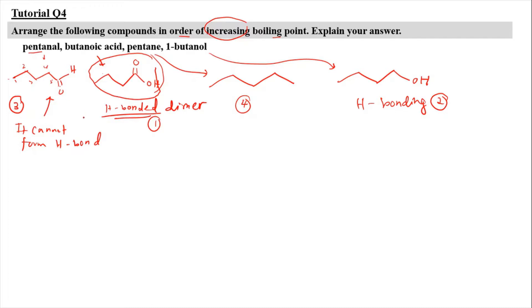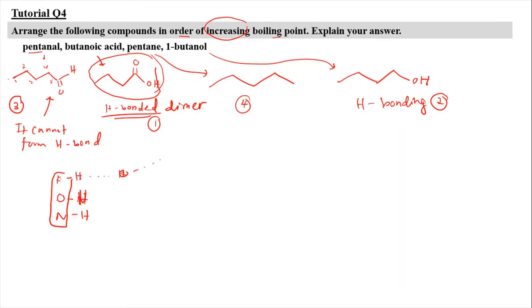Pentanal cannot form hydrogen bonding. When forming a hydrogen bond, the hydrogen must first attach with F, O, or N — meaning F-H, O-H, or N-H. For pentanal, the oxygen just attaches by itself without any hydrogen, so it cannot form hydrogen bonding. Remember FON: F-H, O-H, and N-H are required for hydrogen bond formation. So pentanal only has van der Waals forces between molecules.